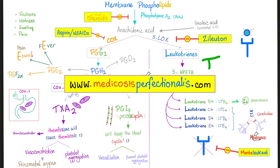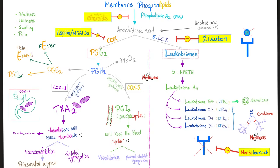I help you learn, understand, and pass exams. As you know, glucocorticoids inhibit phospholipase A2 — that's why they are anti-inflammatory. Because if you take glucocorticoids: no prostaglandins, no leukotrienes, no pro-inflammatory mediators. Aspirin or NSAIDs inhibit cyclooxygenase, zileuton inhibits lipoxygenase, and montelukast or any other '-lukasts' are leukotriene receptor antagonists.